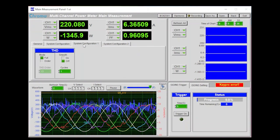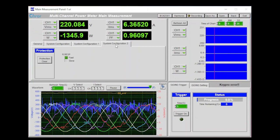In System Configuration 1, we can set the total harmonic distortion settings. And in System Configuration 2, we can clear a protection when it has occurred.